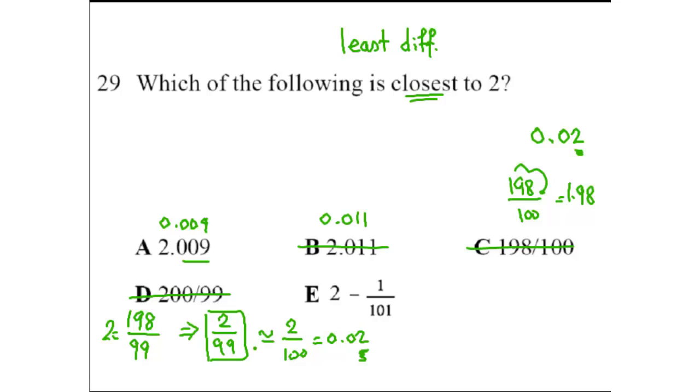Let's go to final E. 2 minus 1 over 101. We're looking for the difference between each of these answers and 2. Here it's 2 minus, so this is the difference right away. So how far away is E from 2? It's 1 over 101. Well, we can say 1 over 101 is almost 1 over 100, which is going to equal 0.01. Again, you're still talking in the tenth place. So again, much bigger than A. A will be the final answer.